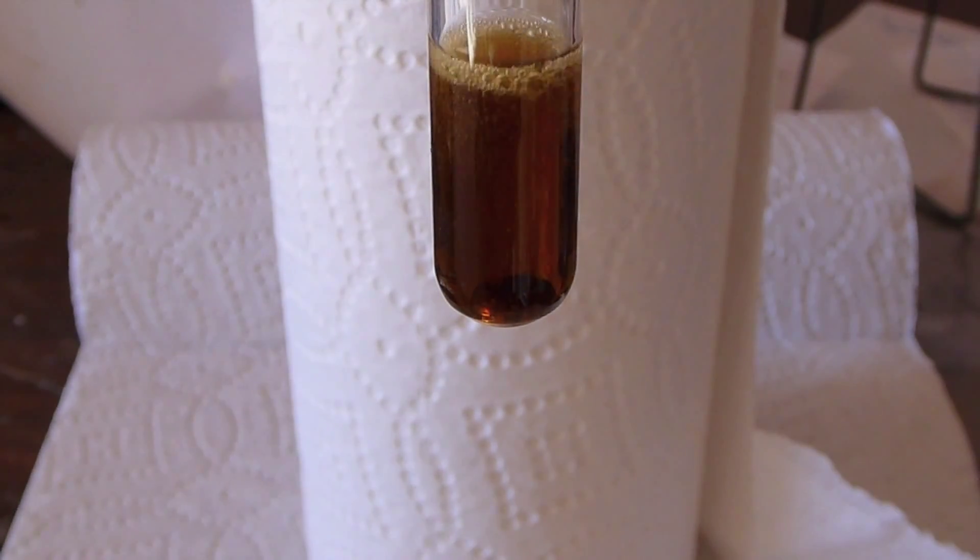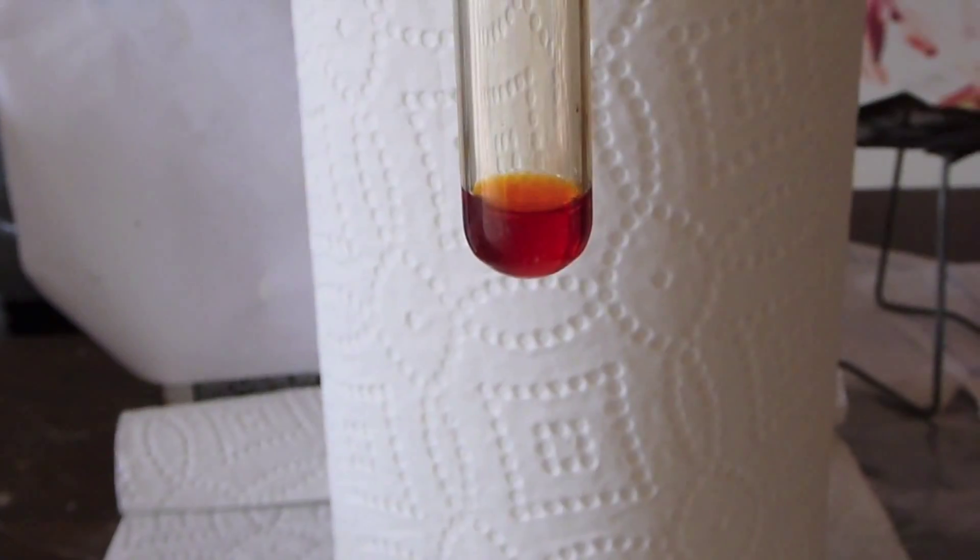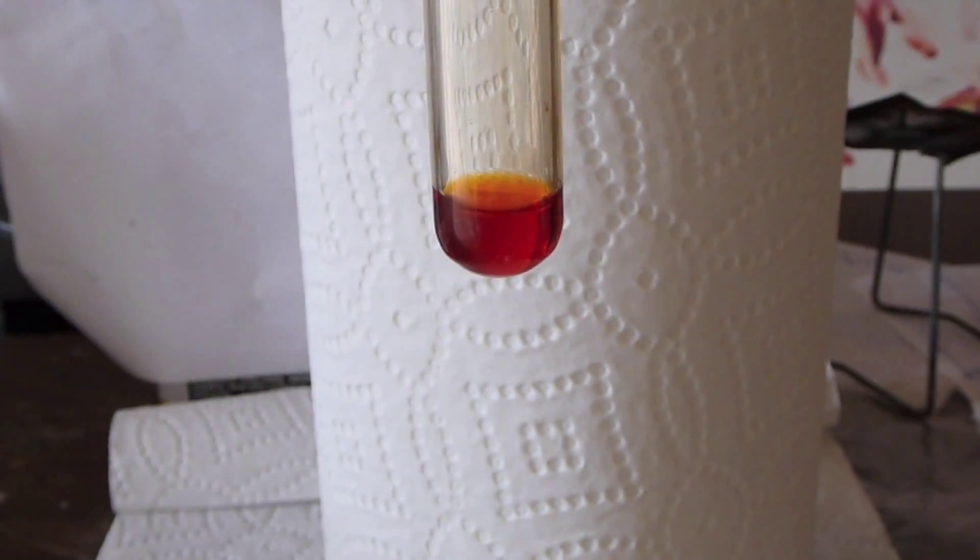Now, because the solution is alkaline, there are plenty of OH groups running around, and the perruthenate will oxidize the OH groups, reducing itself and forming ruthenate. So if you let the solution sit out for a while in alkaline solution, you're going to get pure ruthenate, and the solution will turn a nice orange color like this. So this is pure ruthenate.